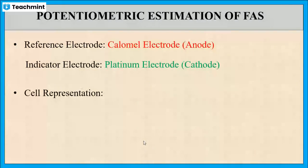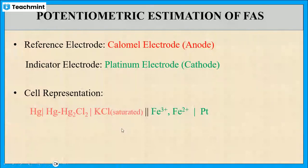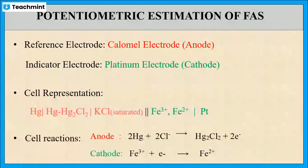This can be represented as: anode side — calomel cell — mercury | mercury-mercurous chloride | potassium chloride — in contact with iron species (Fe³⁺ and Fe²⁺) — in contact with platinum. At the anode, oxidation takes place: mercury is oxidized to mercurous chloride with the liberation of electrons. At the cathode, reduction takes place.